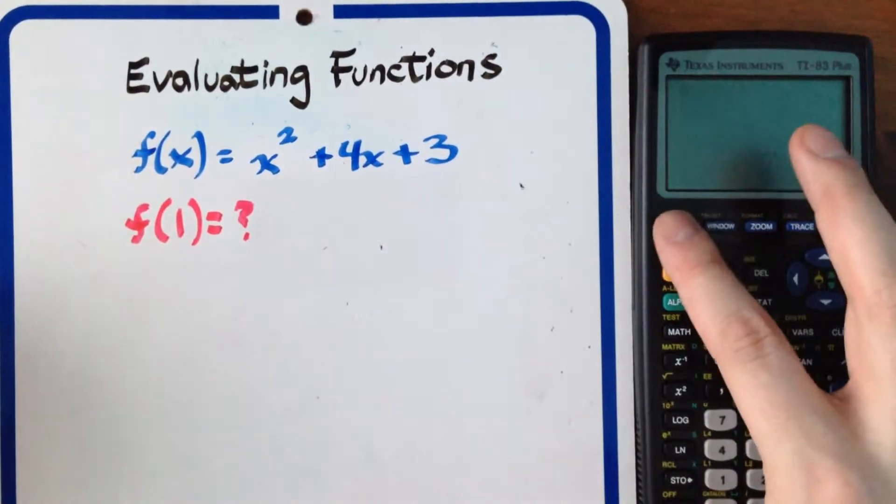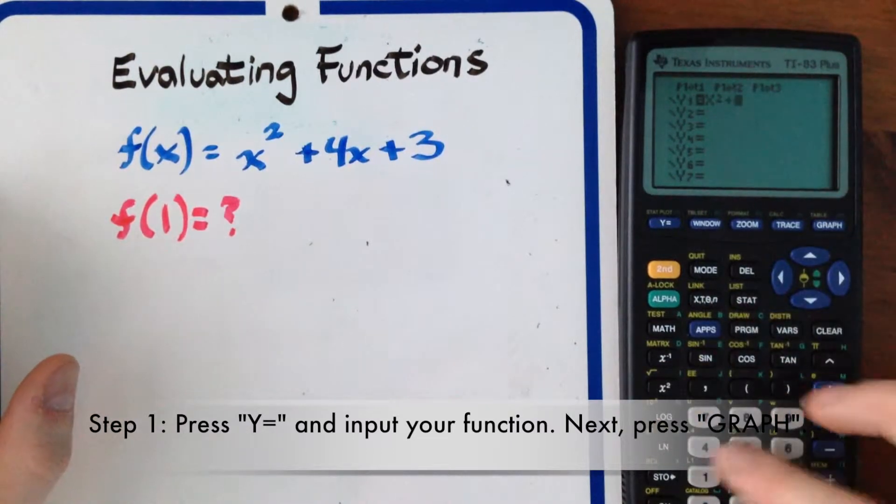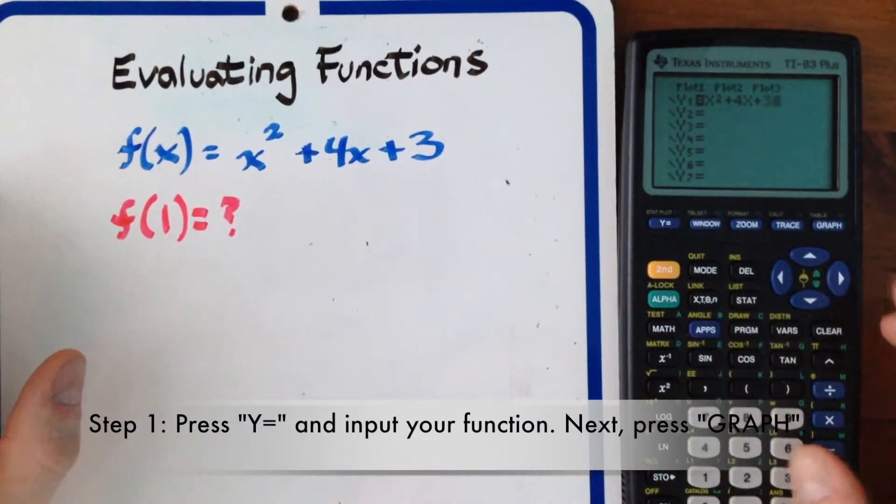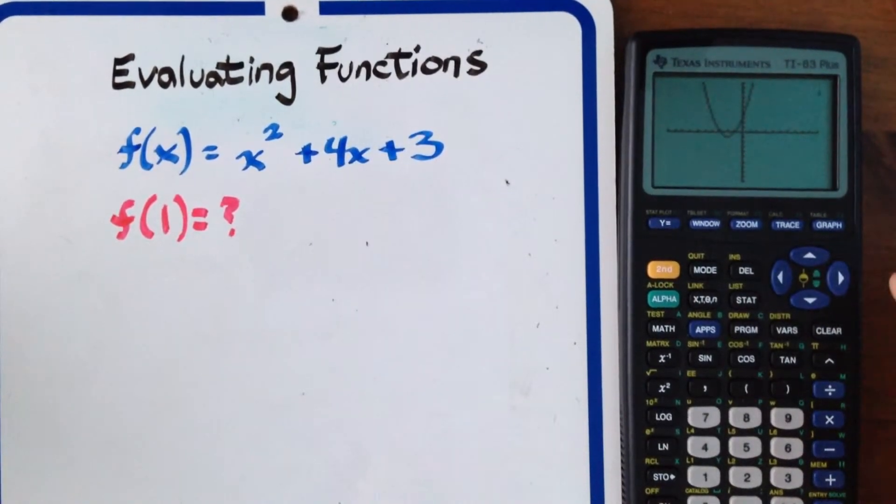Okay so what you're going to want to do is hit y equals on your calculator and then type in the function so x squared plus 4x plus 3. And then from there you're just going to want to hit graph and it's going to graph the problem itself.